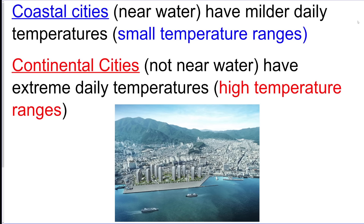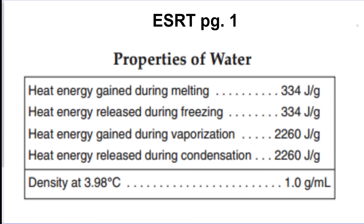Coastal cities have a smaller temperature range because they are near water, and water has a high specific heat. Their highs don't go that high and their lows don't go too low. Continental cities — inland, not near water — get very high highs and very low lows. Know how to use the properties of water chart; heat energy gained or released during phase changes of water is on page one.